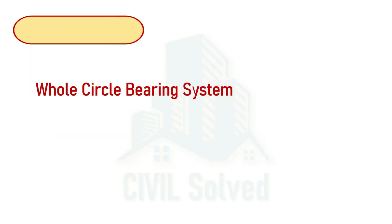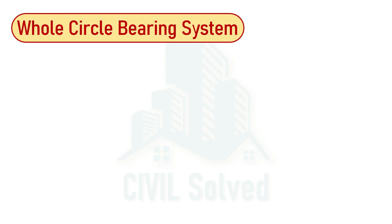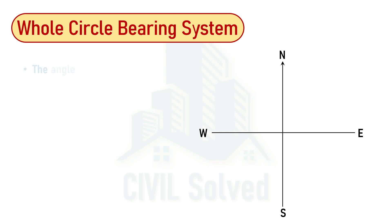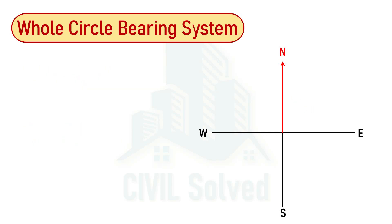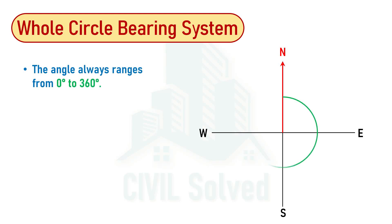In the Whole Circle Bearing system, we know the standard directions. The angle is always measured from the north reference line — the one represented with the red line. In the Whole Circle Bearing system, the angle is always measured clockwise. Since the angle is always measured from north and always clockwise, the range of that angle will always be from 0 to 360 degrees.